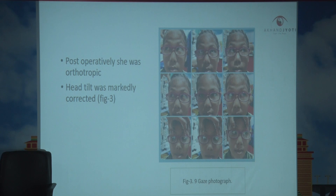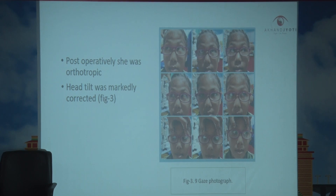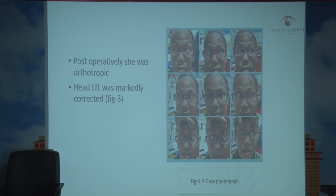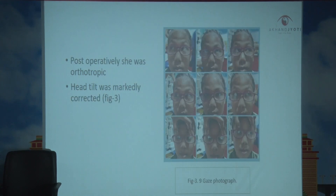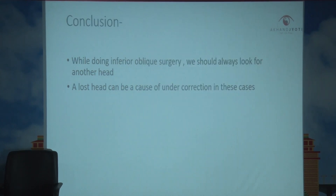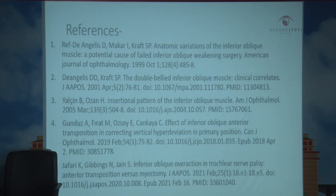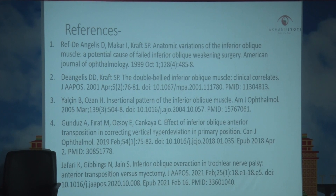Postoperatively, she was orthotropic and head tilt was markedly corrected. In conclusion, while doing inferior oblique surgery, we should always look for another head. A lost head can be a cause of under-correction.